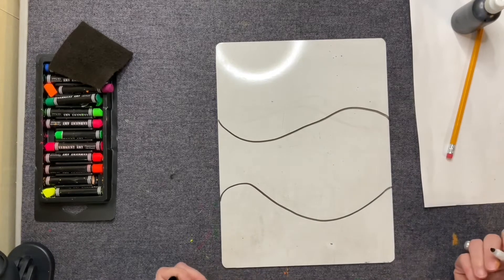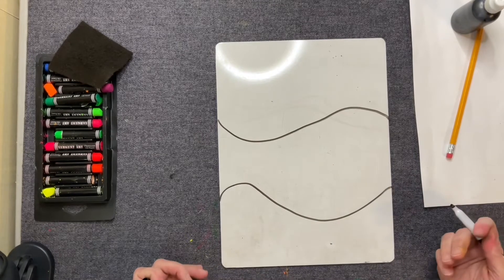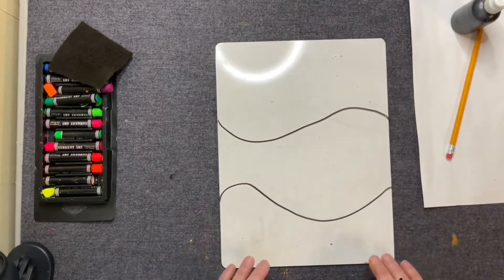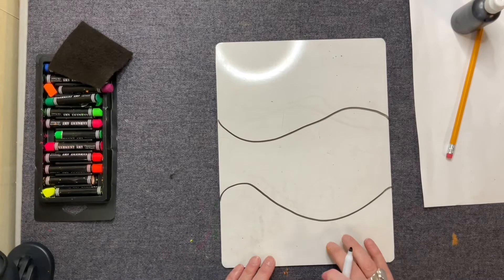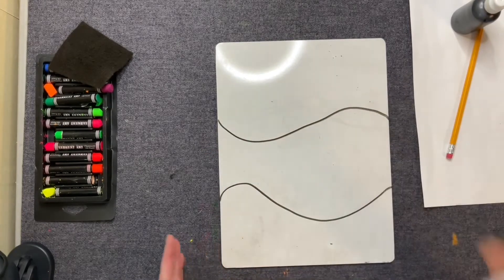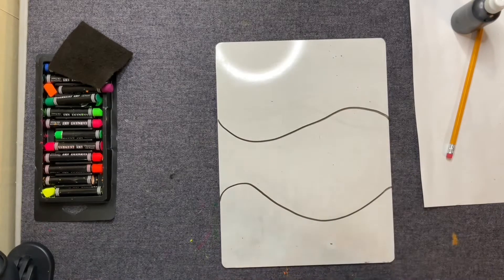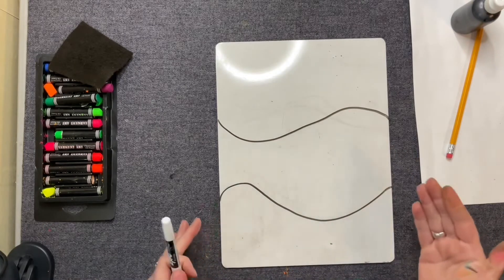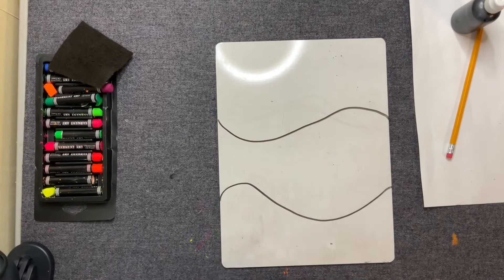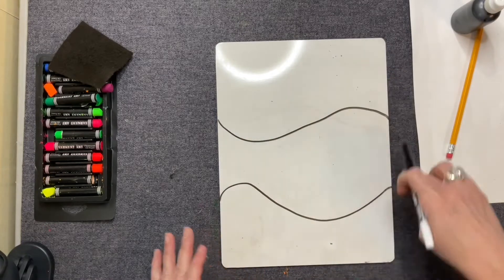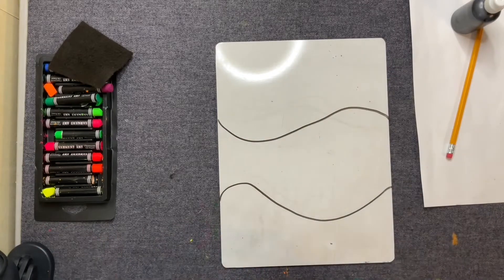Then you're going to pick your words — whatever you want. To practice on this dry erase board, you could just write your name or the ABCs; it doesn't really matter. I just want you to understand how to write the letters. The letters are all going to be capital, so I'm just going to do the ABCs so you can see.